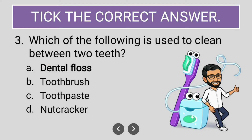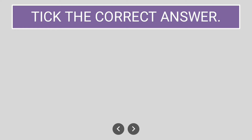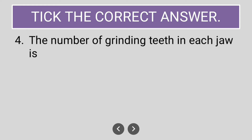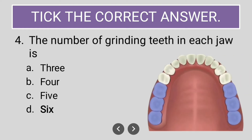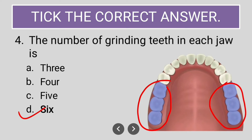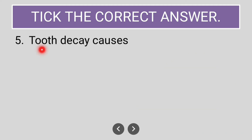The next question is: the number of grinding teeth in each jaw is — the options are three, four, five, six. The number of grinding teeth is six — three on one side and three on the other — so total there are six in each jaw.